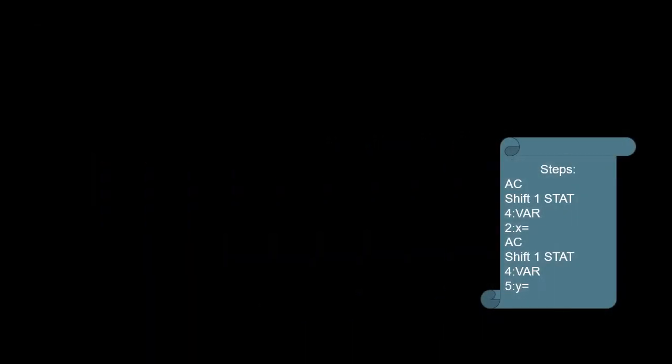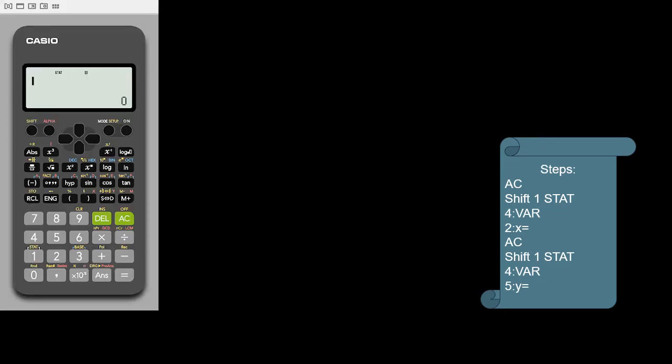On this slide, I will explain how to find the mean point. There's the steps and here's the calculator. We will start by pressing AC and then shift number 1 for stats. Then, number 4 for var and then we choose number 2 equals, that's x bar. And then AC again, shift, 1 for stats, and then number 4 for var and then we choose number 5, y bar. And then there's your value of your mean point.